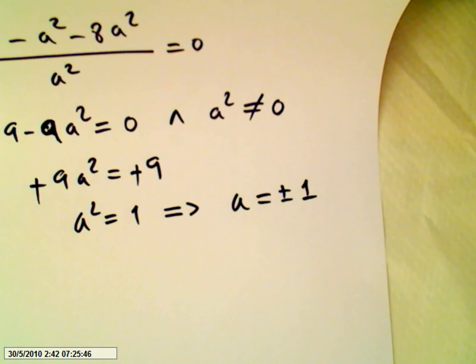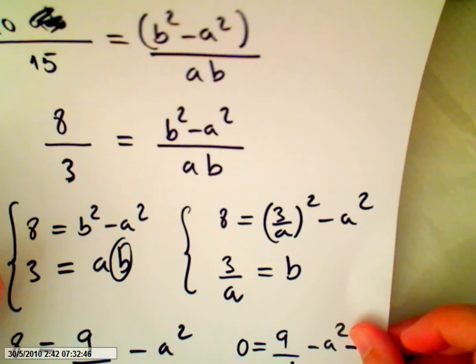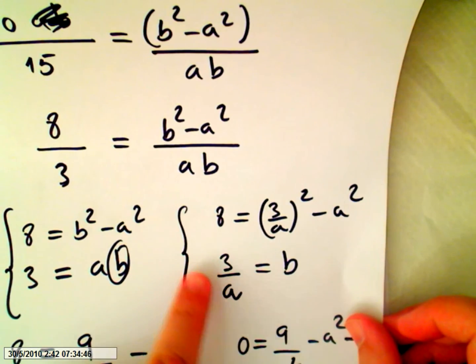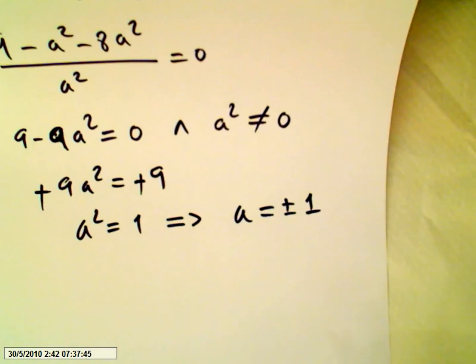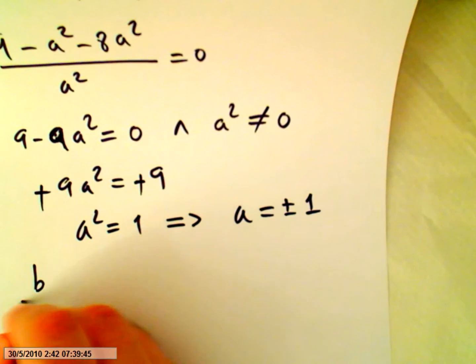Okay, now that we got this number, we can go back to b equals 3 over a. So b equals 3 over a.